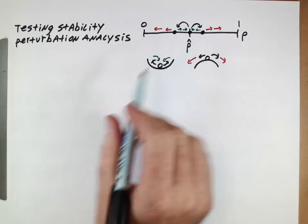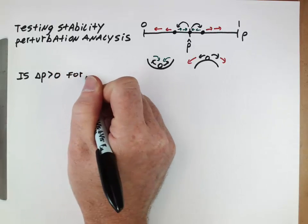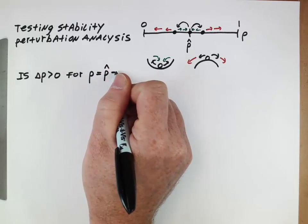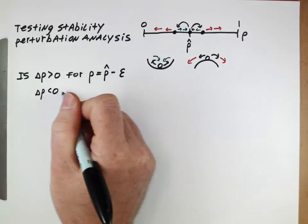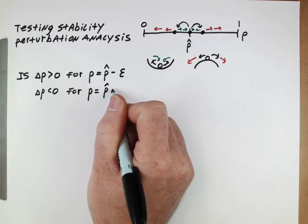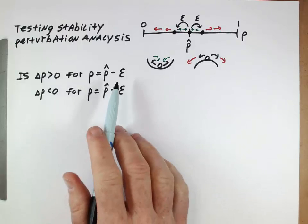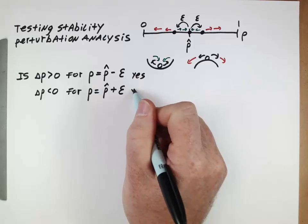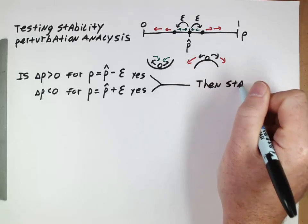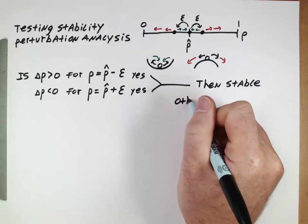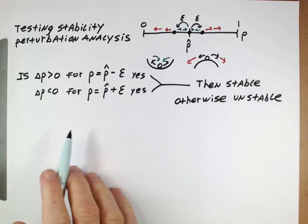The way we mathematically do it is we ask the following questions: Is delta p positive for some value of p equal to the equilibrium minus some small number epsilon? And is delta p negative for some value of p equal to the equilibrium plus some small amount epsilon? If both of these are true together, then we know that the equilibrium is stable. Otherwise, if either of them is untrue, then the equilibrium is unstable.